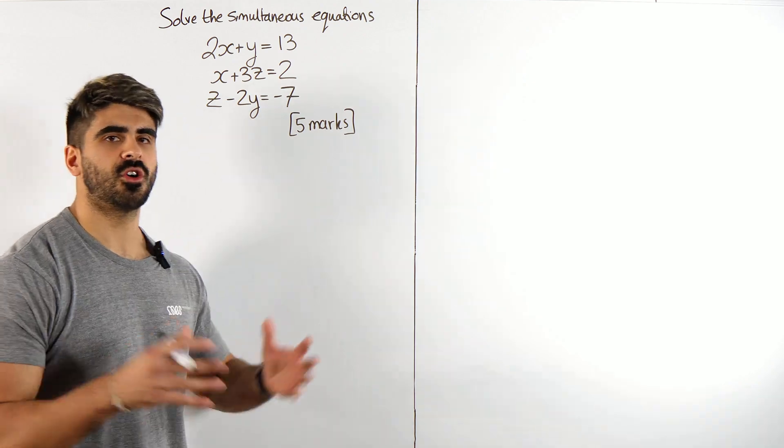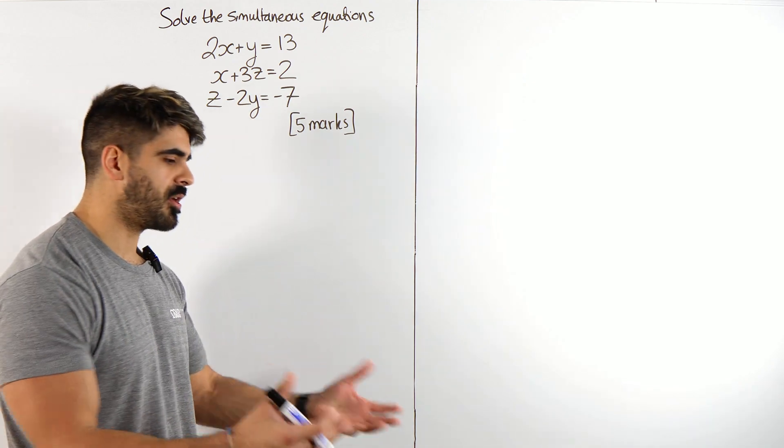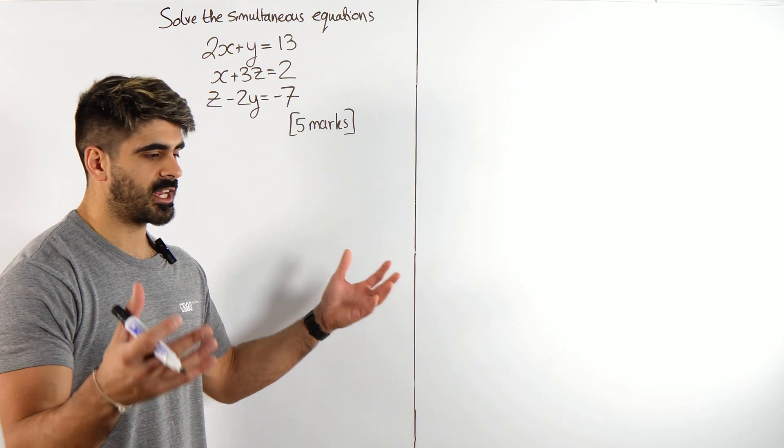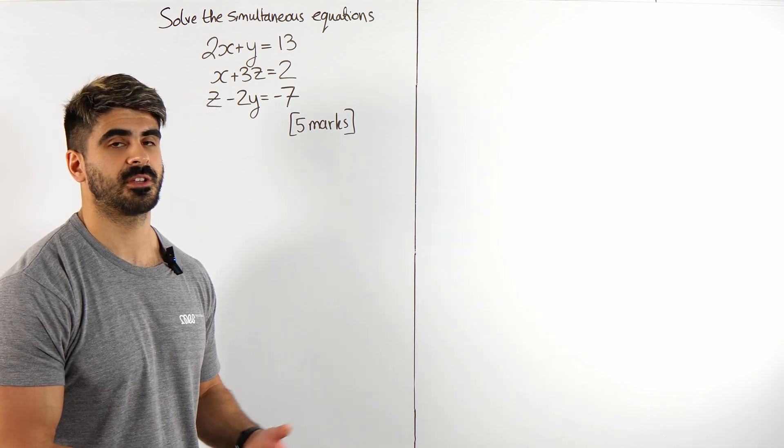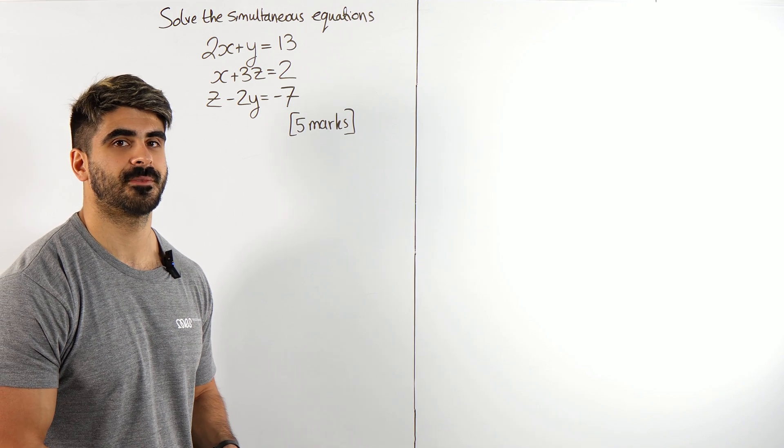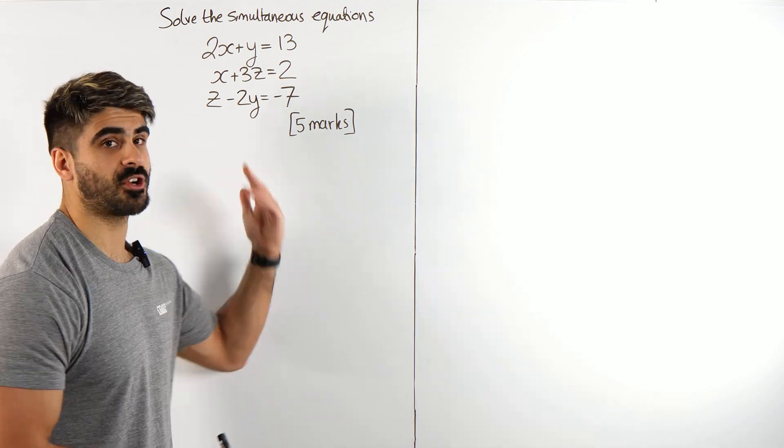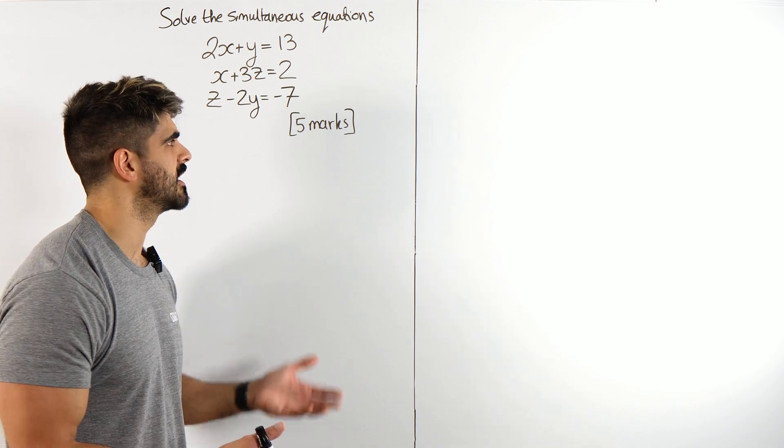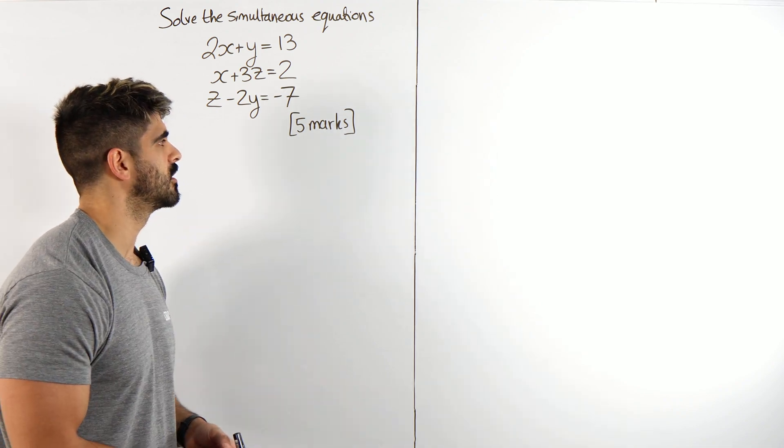Now, in the exam, they always say do not use trial and improvement, but the mark scheme looks like trial and improvement to me, just a bit more of a posh trial and improvement. What they mean is don't just try and make up values of x, y, and z and find the one that works.